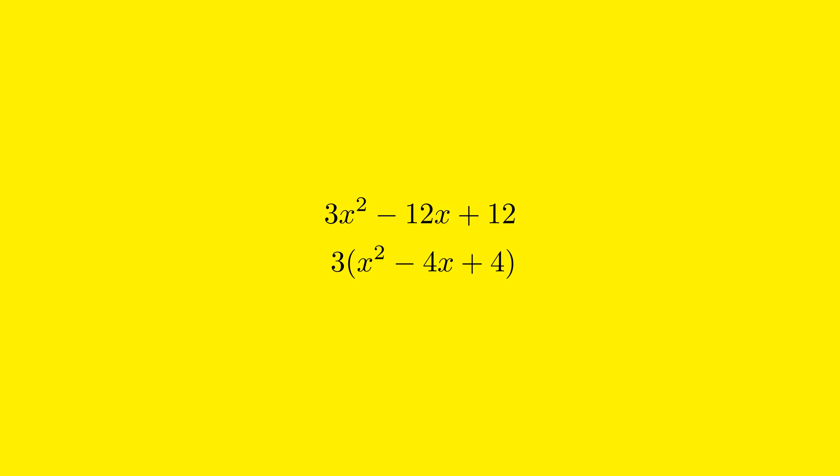Factoring out the greatest common factor simplifies the expression, making it easier to work with in subsequent steps.